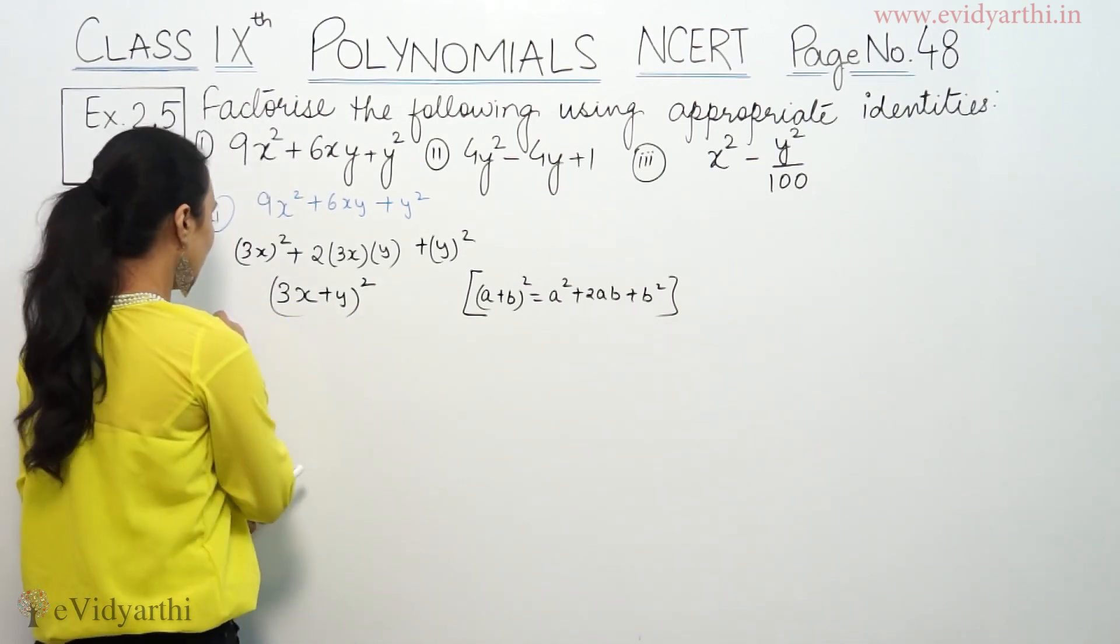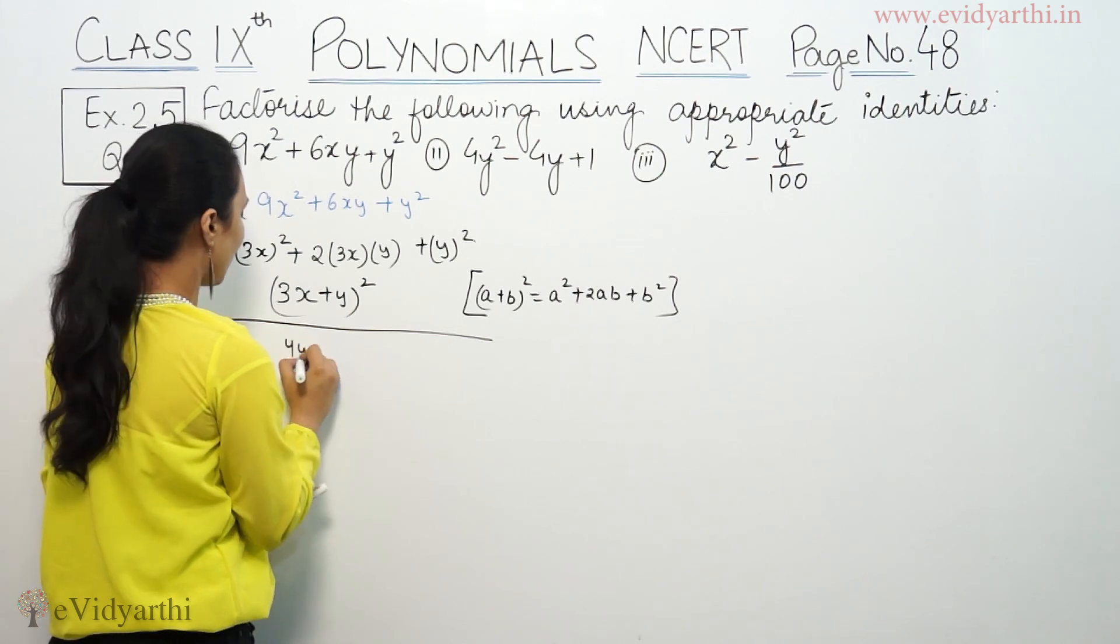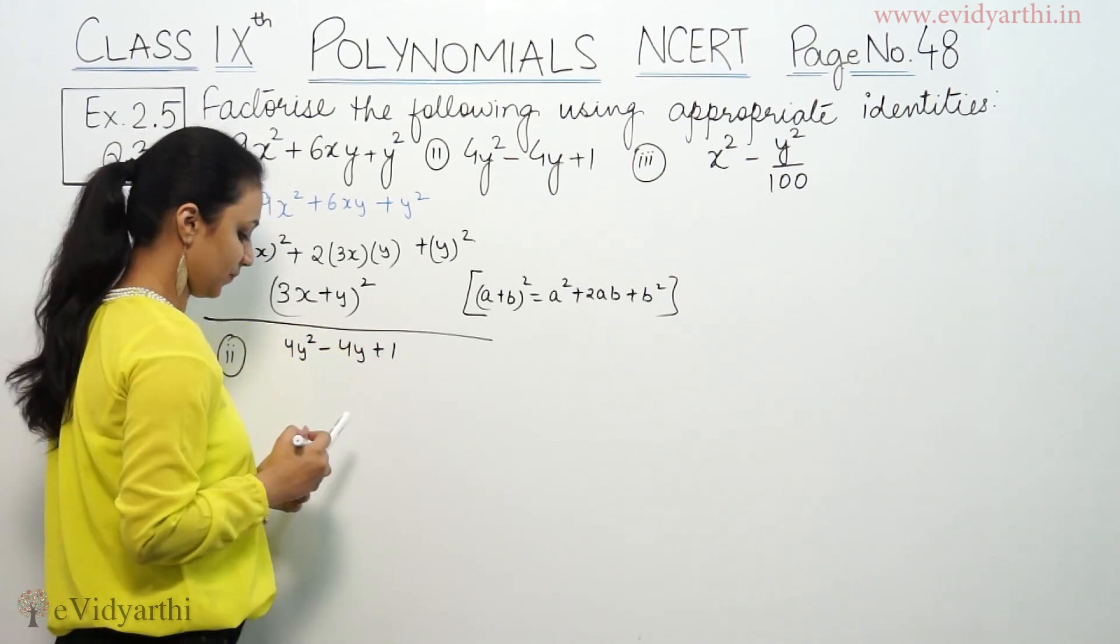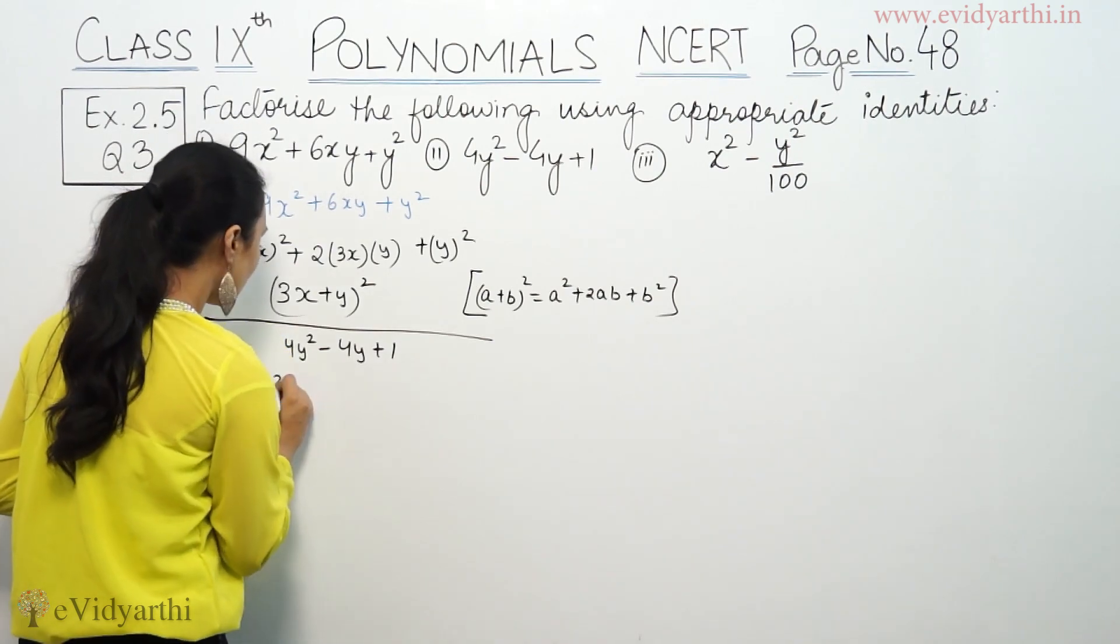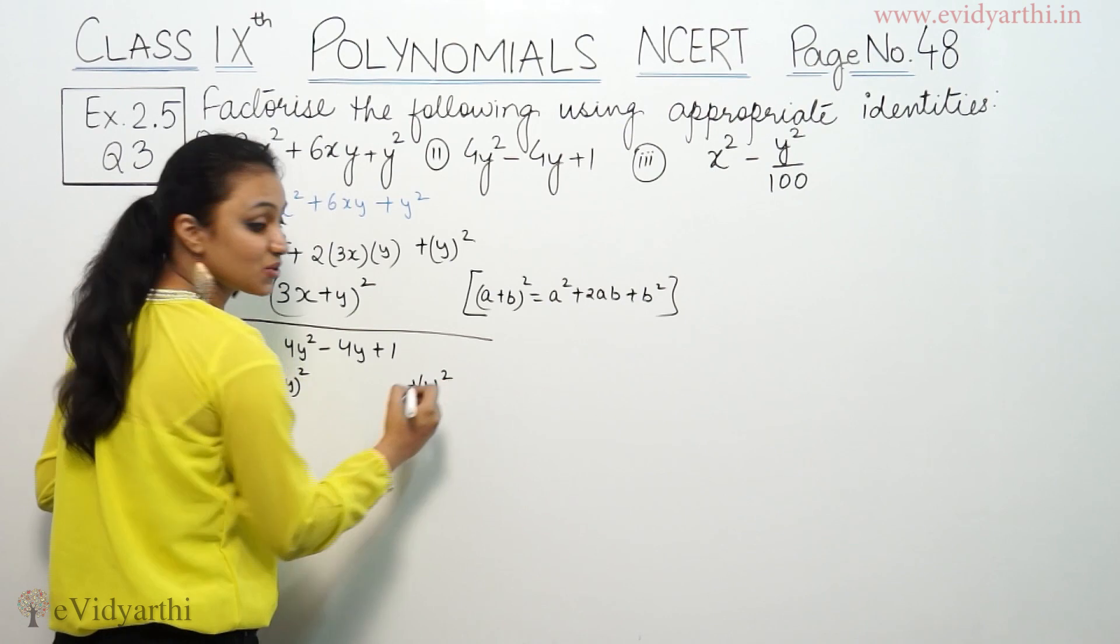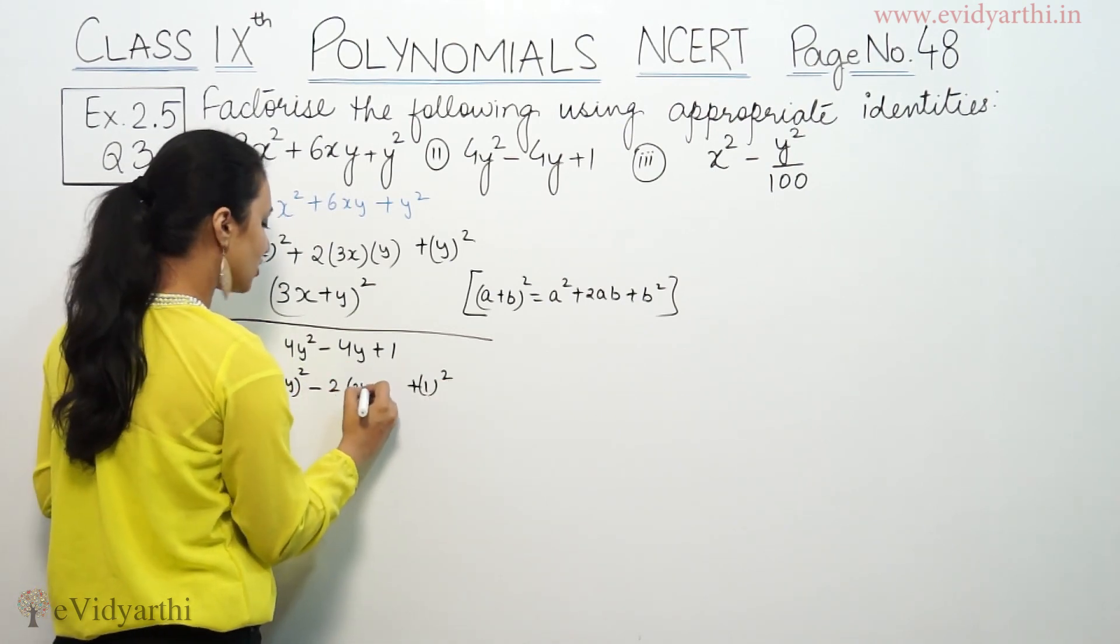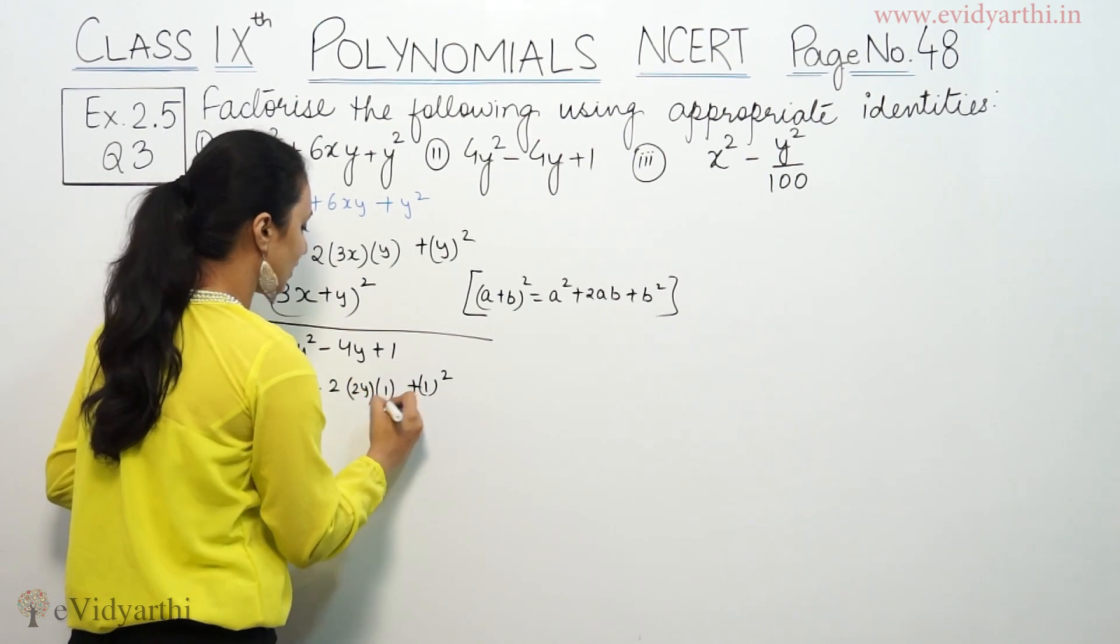So, in the second part, we have 4y² minus 4y plus 1. Now, this is 2y whole square. And the last term, we can write 1². And we have minus sign here, then, 2 into a is 2y into b is 1.